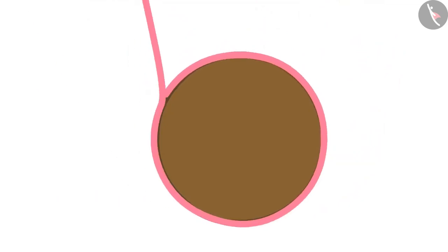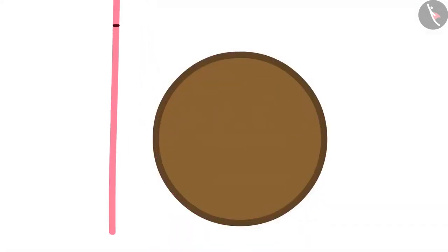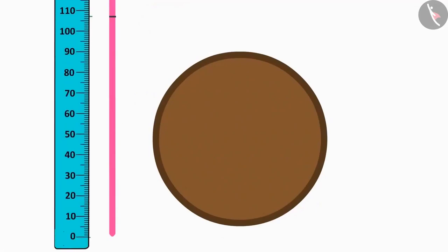After that, I will mark the thread where it meets the starting point. Now, keeping the thread straight, I will measure it with a scale up to the marked point. This way, I will know what is the length of this table's boundary.